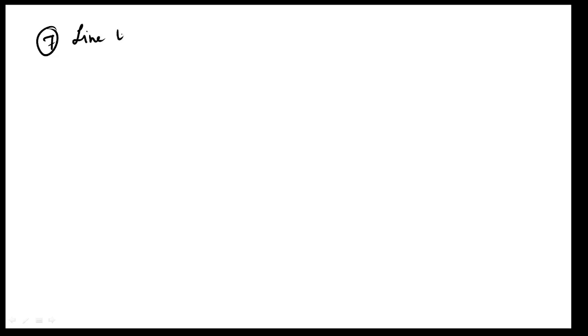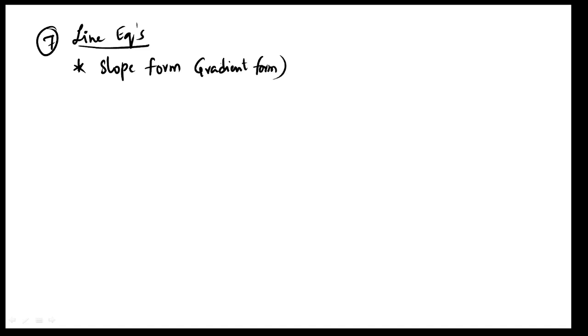Next formulas: line equations — different line equations are compulsory every year. First, if only slope is given, use gradient form or slope form. If only slope is there, the equation is y equals mx.